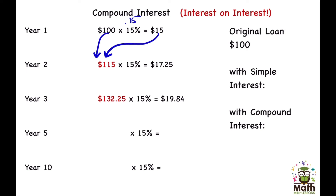Now here's where you find interest on top of interest. We take the $100 and add the $15 to get $115 — this is what he owes right now, assuming he hasn't paid anything back. Now we find 15% of $115: multiply by 0.15 and you get $17.25. That's the interest in the second year. We compound them together: $115 + $17.25 = $132.25.